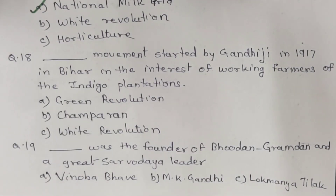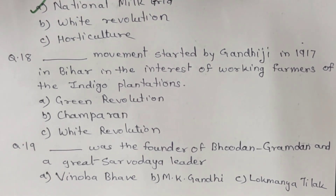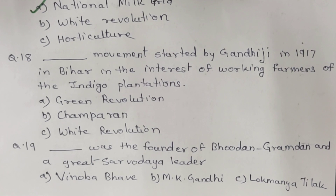Question 18. Which movement was started by Gandhiji in 1917 in Bihar in the interest of working farmers of the indigo plantations? Options are A. Green Revolution. B. Champaran. C. White Revolution. And the correct answer is B. Champaran.